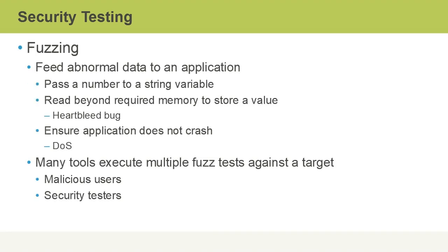Fuzzing means that we are feeding abnormal data to an application, and we want to observe its results. For instance, we might pass a number to a string variable. We might read beyond required memory to store a value, as was the problem related to the Heartbleed bug. Or we might make sure that applications don't crash through denial-of-service attacks. Many tools can be used to execute multiple fuzz tests against a target — it could be manual, but often it's done in an automated fashion using a tool designed specifically for fuzz testing. Fuzz testing must be done from the perspective of a malicious user or a security tester just testing an application.